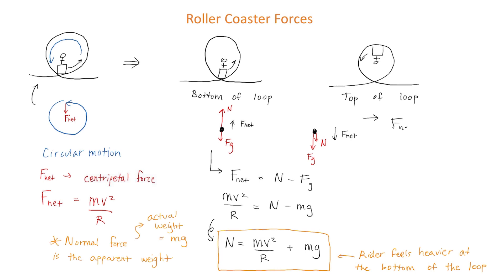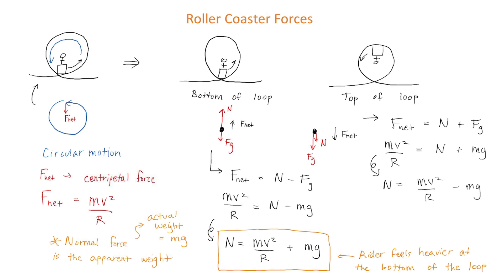Now we write our F_net equation: F_net = N + F_g. Since F_net is the centripetal force we can replace it with mv²/r, and replace the force of gravity with mg. Rearranging and isolating for the normal force gives us: N = mv²/r - mg.